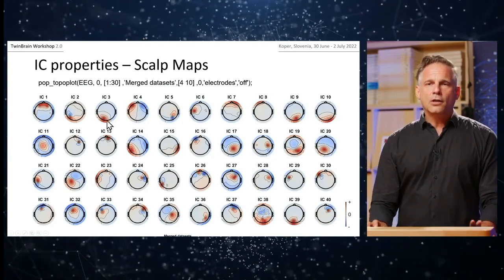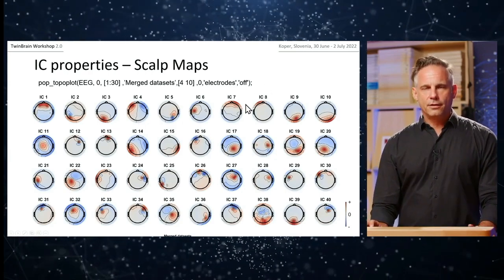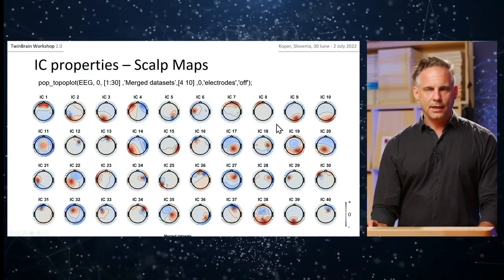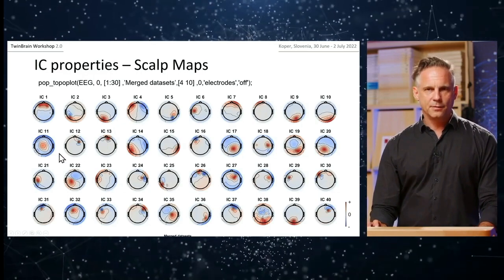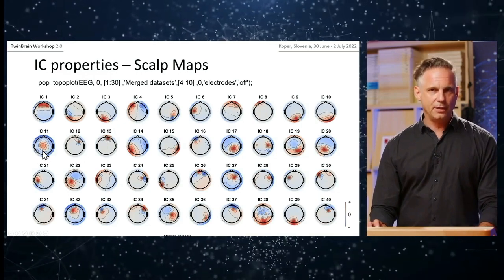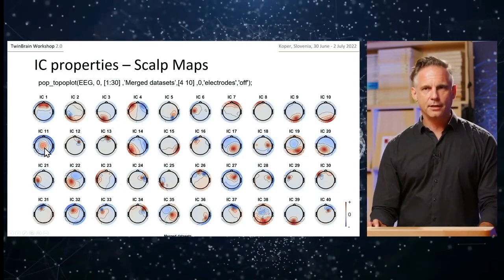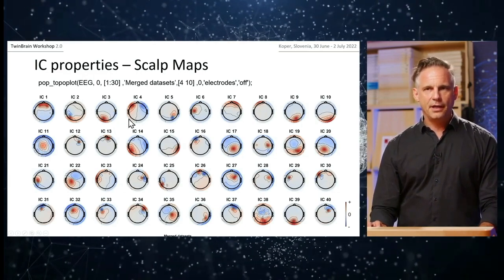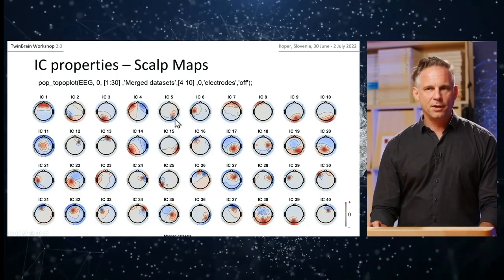Among the other components, some are brain — like IC3 — and some are muscles.